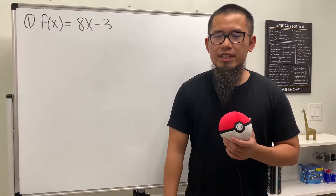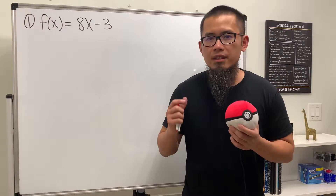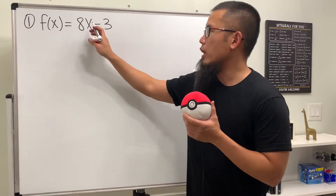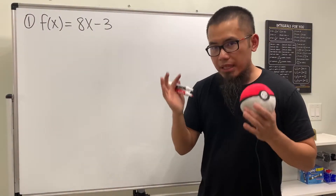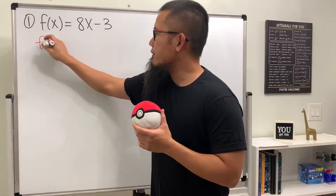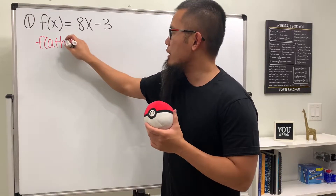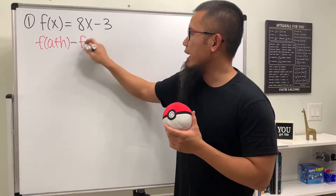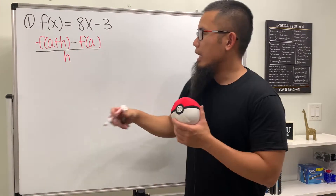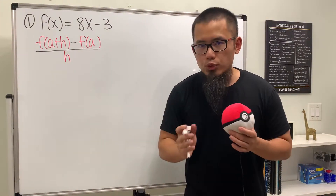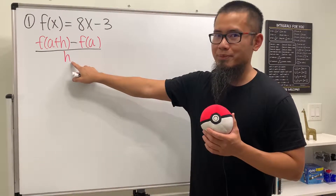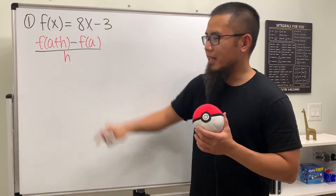Dear pre-calculus students, in this video we'll be doing four problems on finding the difference quotient of a function. The difference quotient formula is f(a+h) minus f(a), all divided by h. We can expect to cancel the h from the bottom — if we can successfully cancel that out, we know we are on the right track.